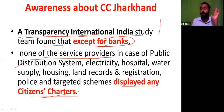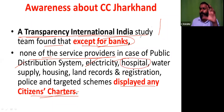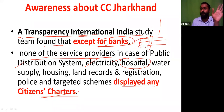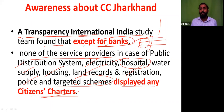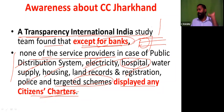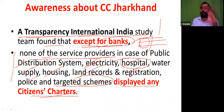In hospitals, water supply, housing, land records, registration, police, targeted schemes — except banks, in none of these is the Citizens Charter displayed. The implication is that all these areas should have Citizens Charters displayed. Though they have them, they are not displaying — this is a great defect in Citizens Charter and a major reason why there is no public awareness about them.